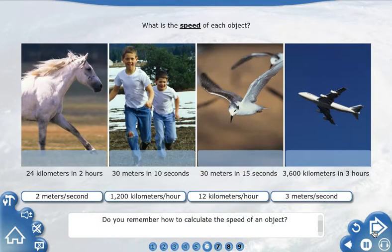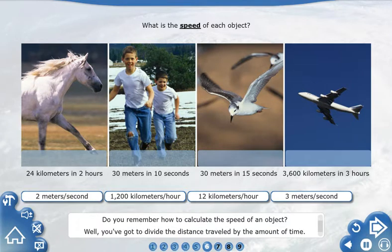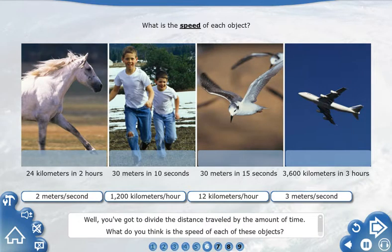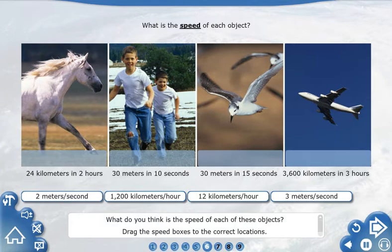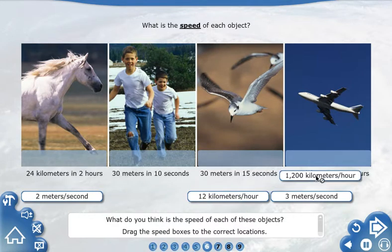Do you remember how to calculate the speed of an object? Well, you've got to divide the distance traveled by the amount of time. What do you think is the speed of each of these objects? Drag the speed boxes to the correct locations.